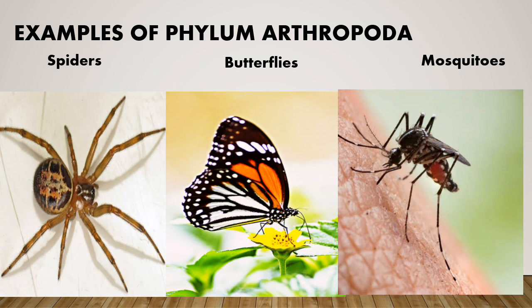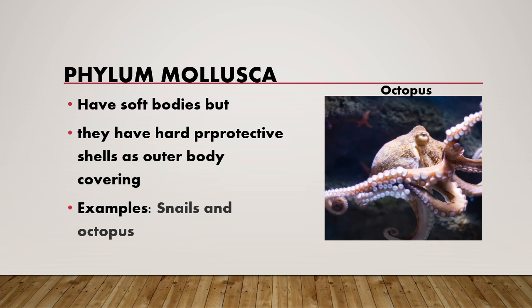Examples of Phylum Arthropoda — you can see here in the diagram spiders, butterflies, and mosquitoes. Phylum Mollusca: octopus and snail are examples of this phylum. They have soft bodies but a hard protective shell as outer body covering.